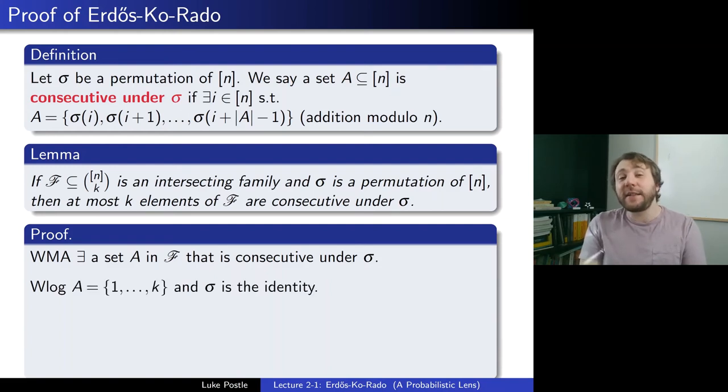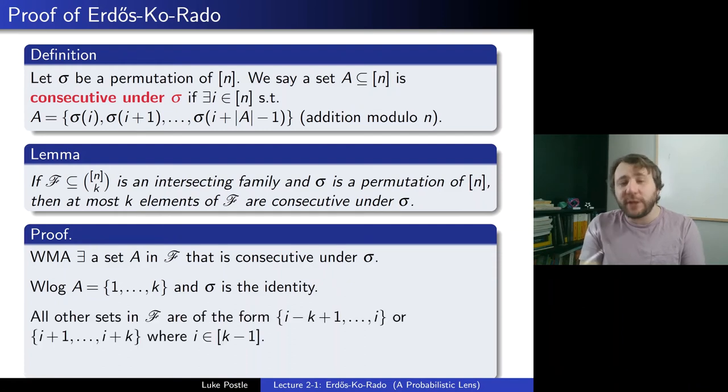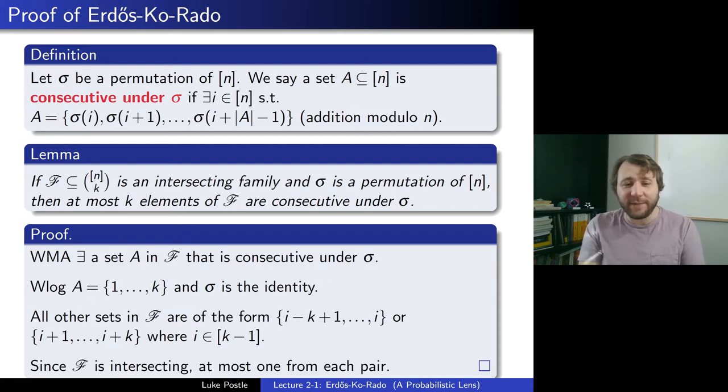Now, without loss of generality, we can assume that sigma is the identity, the permutation doesn't really matter then, and that A is 1 up to k. We can just fix it to be the first elements. Given this, now we can proceed with characterizing the rest of the sets. So namely, all other sets in F that are consecutive have to be of the form i minus k plus 1 up to i, or i plus 1 up to i plus k, where i is in k minus 1. So they have to be kind of left or right sets for one of these i. Then since F is intersecting, we have at most one from each of the pairs, as these pairs don't actually intersect. That then concludes the proof. So we have the set itself, and then with these overlapping options, these k minus 1 pairs, you can only have one from each pair.